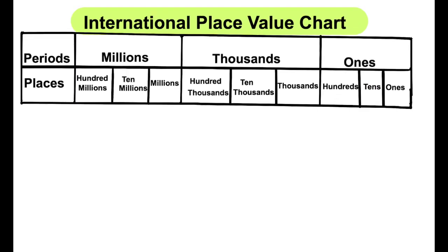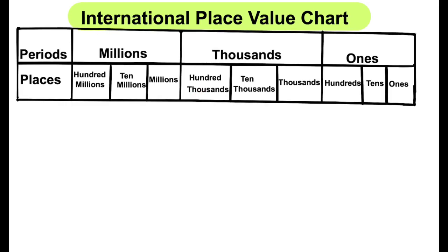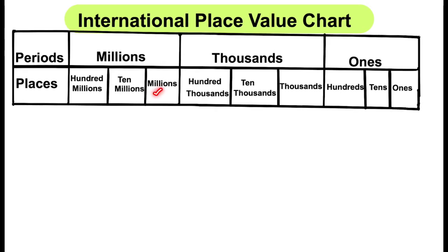The thousands period is divided into thousands, ten thousands, and hundred thousands. The millions period is divided into millions, ten millions, and hundred millions.